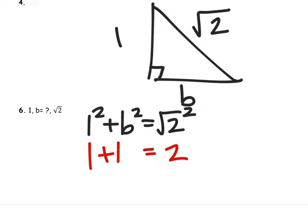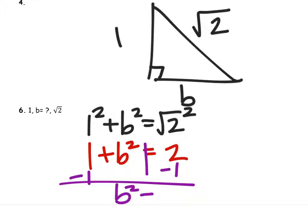One squared is one plus B squared. And to solve for B squared, we need to subtract one from both sides. That gives us B squared equals one.